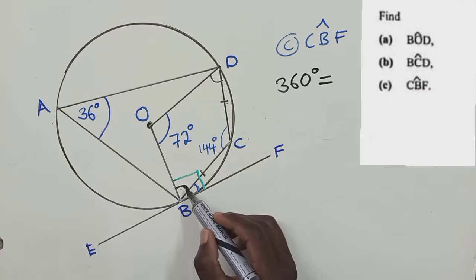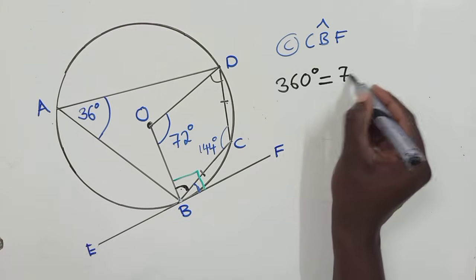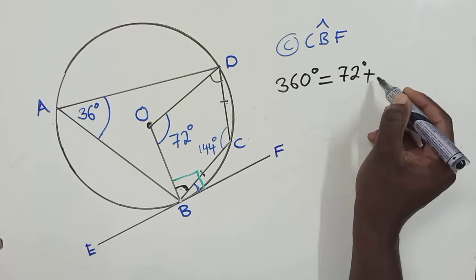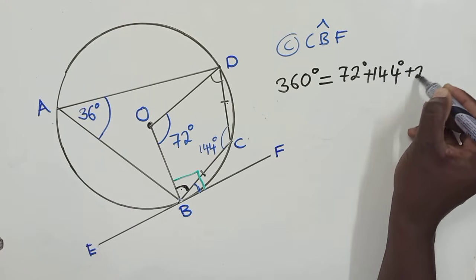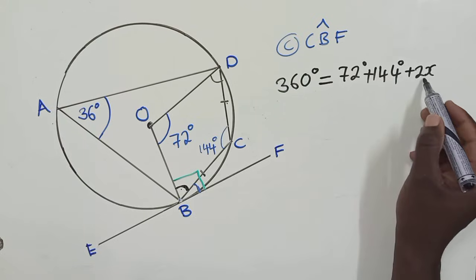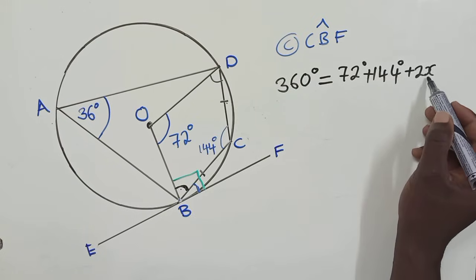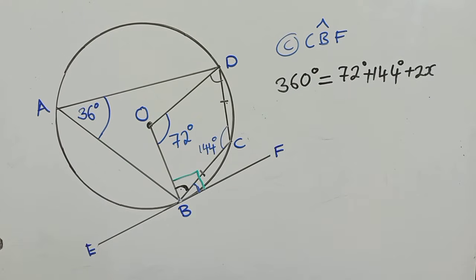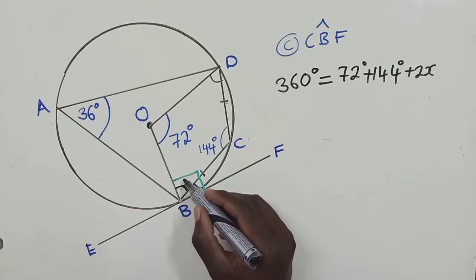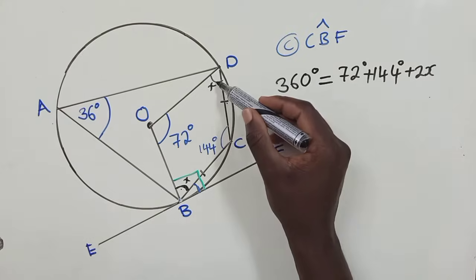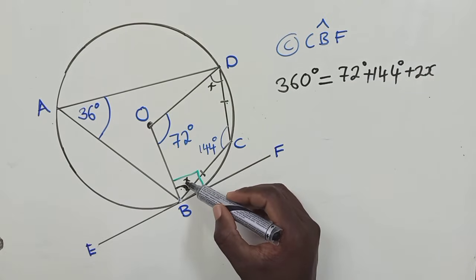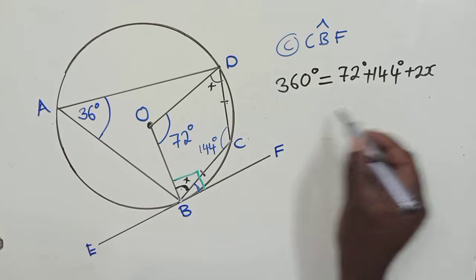So say 360 degrees is equal to 72 degrees plus 144 degrees plus 2x. So I've put 2x here for a purpose and the reason why I've put 2x is because I'll call this as x and this also as my x. I don't know which angle is here and here. So I'll call this is x plus x. It gives me 2x.